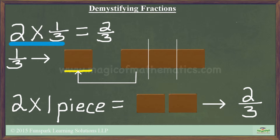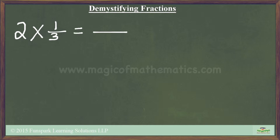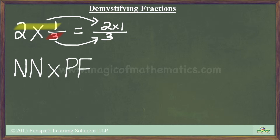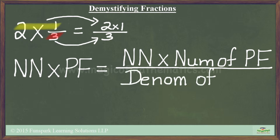Let us summarize the learnings from our first case. For our example problem, namely 2 times 1/3, our answer turned out to be a fraction whose numerator is 2 times 1 and whose denominator is 3. Hence, we can see that a natural number times a proper fraction yields a fraction whose numerator is obtained by multiplying the natural number with the numerator of the original fraction, and whose denominator is the same as the denominator of the original fraction.